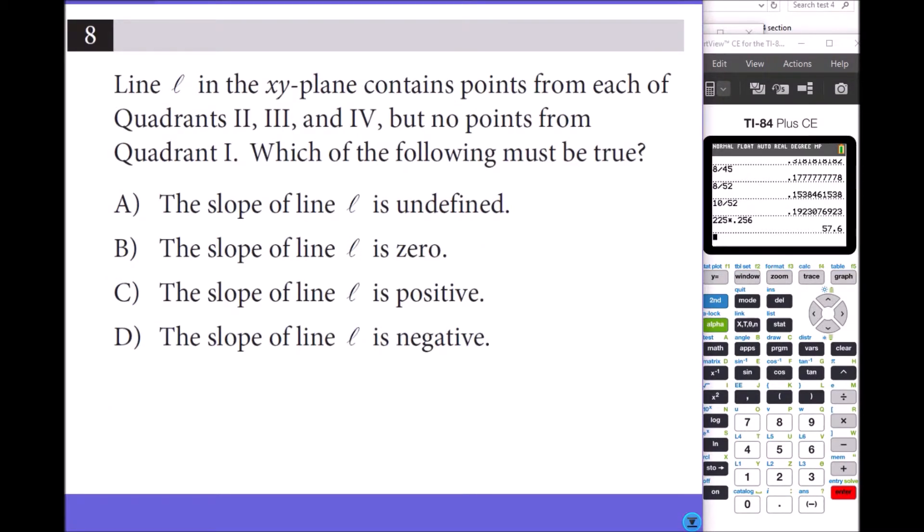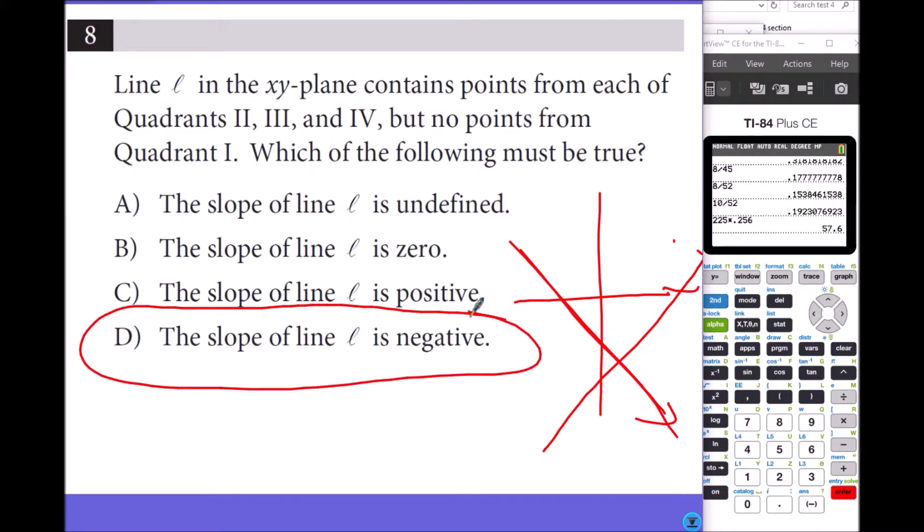Number 8: Line L in the XY plane contains points from each of quadrants 2, 3, and 4, but no points from quadrant 1. So it should look something like this, right? It cannot touch the first quadrant. If you do anything like that with a positive slope, it will always go through the first quadrant. So it has to be a negative slope. Zero means horizontal, undefined means a vertical line.